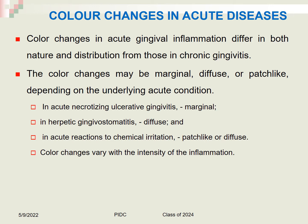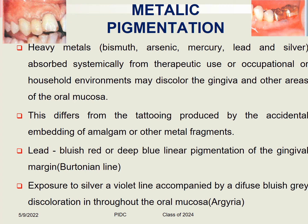Color changes in acute gingival diseases differ in nature and distribution from chronic gingivitis. Changes may be marginal, diffuse, or patch-like depending on the underlying condition — for example, marginal in acute necrotizing ulcerative gingivitis, diffuse in herpetic gingivostomatitis, and patch-like in chemical irritation. Heavy metals such as bismuth, arsenic, mercury, lead, and silver, when absorbed systemically from therapeutic use, occupation, or household environments, may discolor the gingiva and oral mucosa. This differs from amalgam tattoo caused by accidental embedding of amalgam.